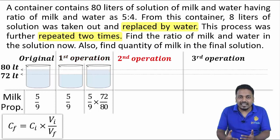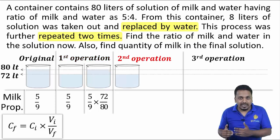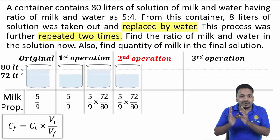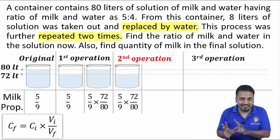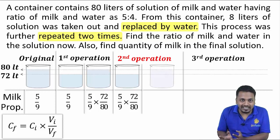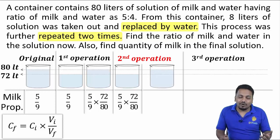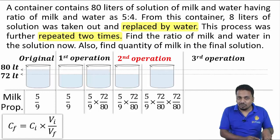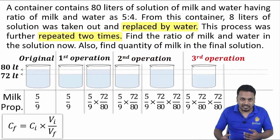Now in second operation, 8 liters of mixture is again removed and this 5/9 × 72/80 proportion will remain intact. After addition of 8 liters of water, it becomes 5/9 × 72/80 × 72/80. This proportion will become initial proportion for third operation.